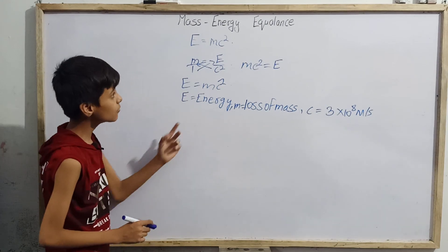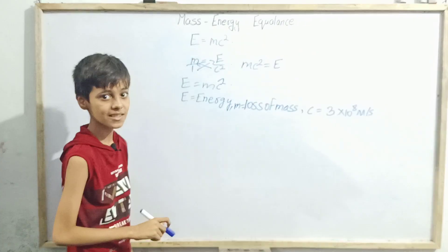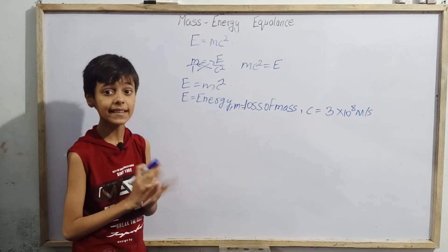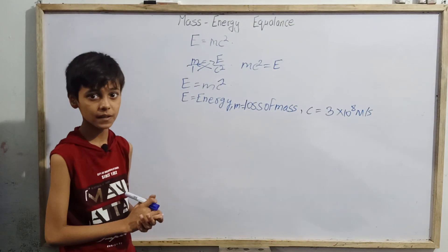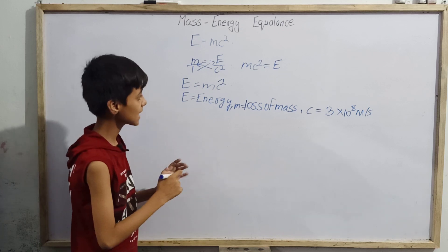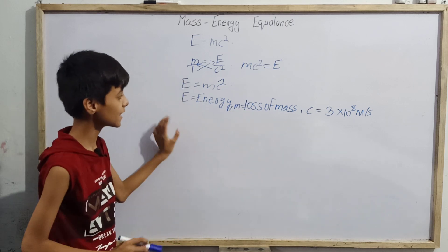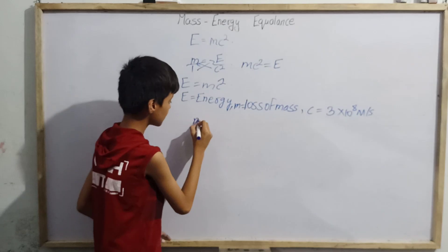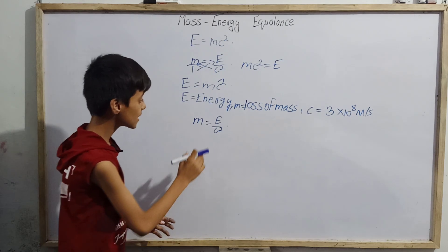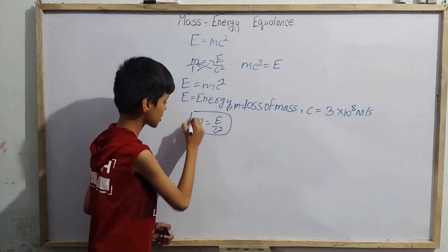Now why is m equals E over c² considered the more exact, correct equation? Because Einstein actually patented in 1905 — he was then an unknown scientist — a special theory of relativity paper dealing with mass-energy equivalence. He stated that in our daily world, if loss of mass is m, energy is E, and c is speed of light, then the relation between them is m equals E over c². He predicted that mass is itself a form of energy.